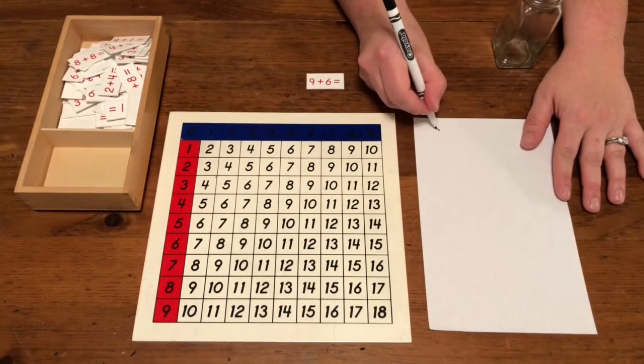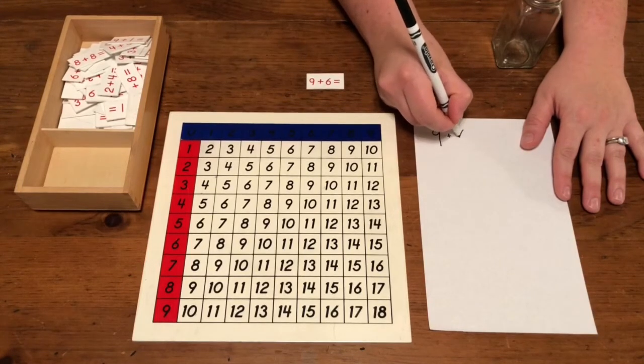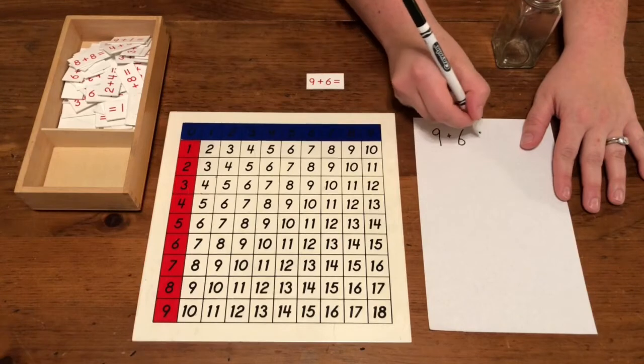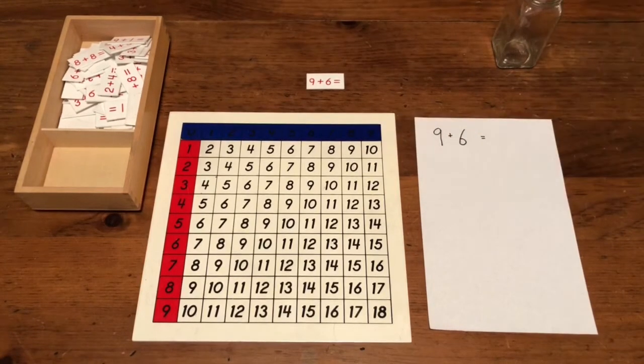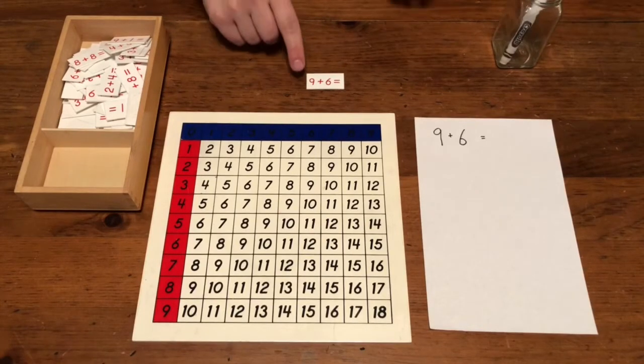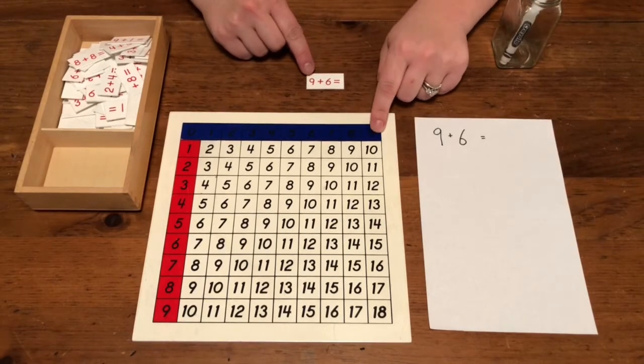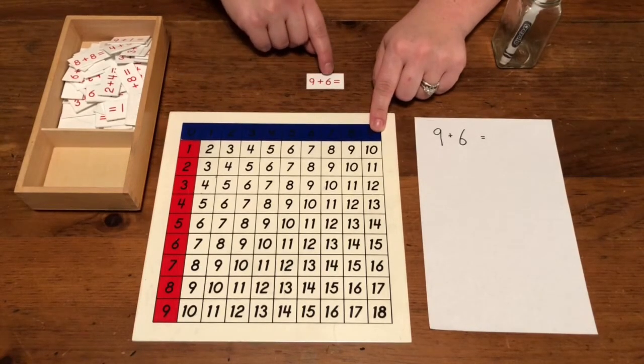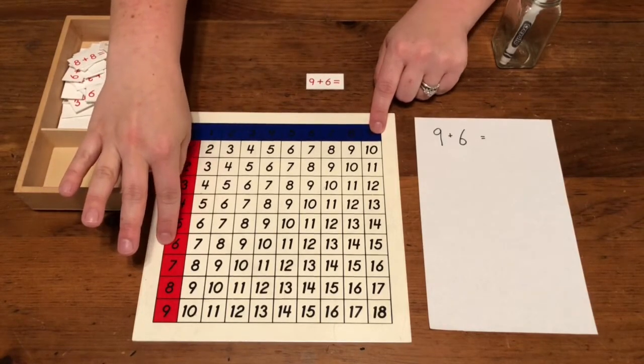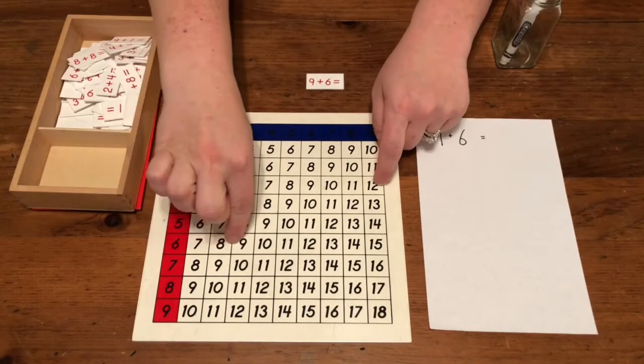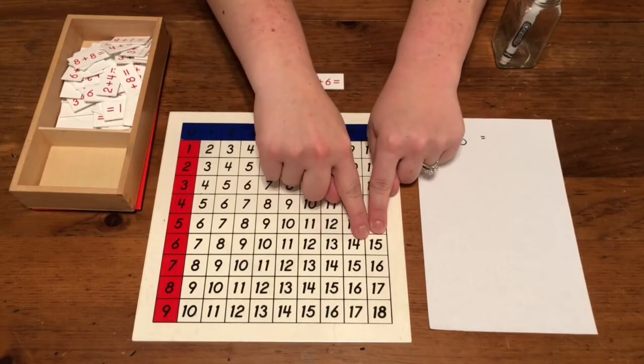This equation says nine plus six equals. My first number is nine, which is right here. My second number is six, which is down here. I'm going to use my fingers to find the spot that they meet. My answer is 15.